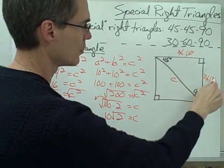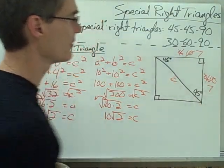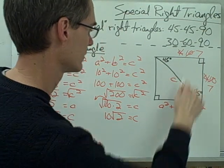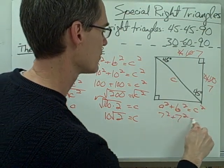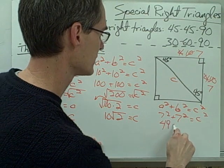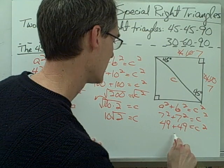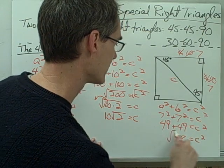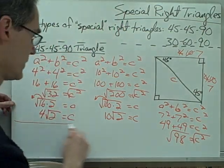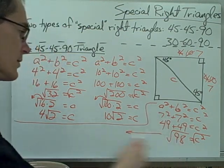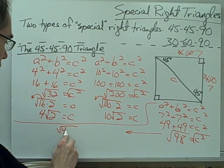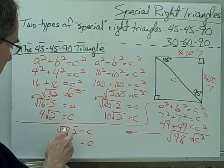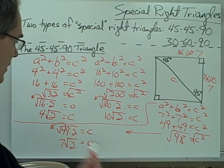Let's use one more example with side 7. Using the Pythagorean theorem: 7² + 7² = c², so 49 + 49 = 98 = c². Taking the square root: √98 = √(49 × 2) = 7√2. So the hypotenuse is 7√2.